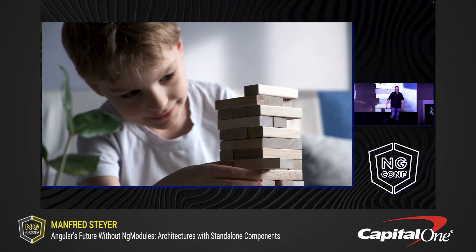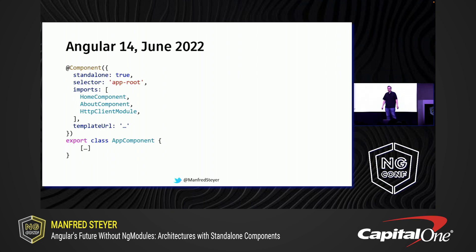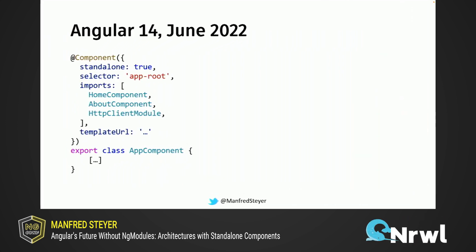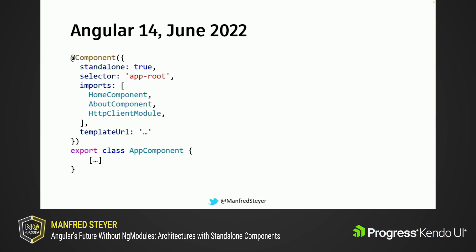And now they just did it again with standalone components. They made ng modules optional and still everything works. You can even use existing code using modules with standalone components. Everything you need to do is just set this standalone flag to true and import the compilation context — or as I call it, the neighborhood of the component. Everything the component is allowed to use is in that imports array: other components, directives, or pipes. And this is really quite amazing, but also quite easy, isn't it?